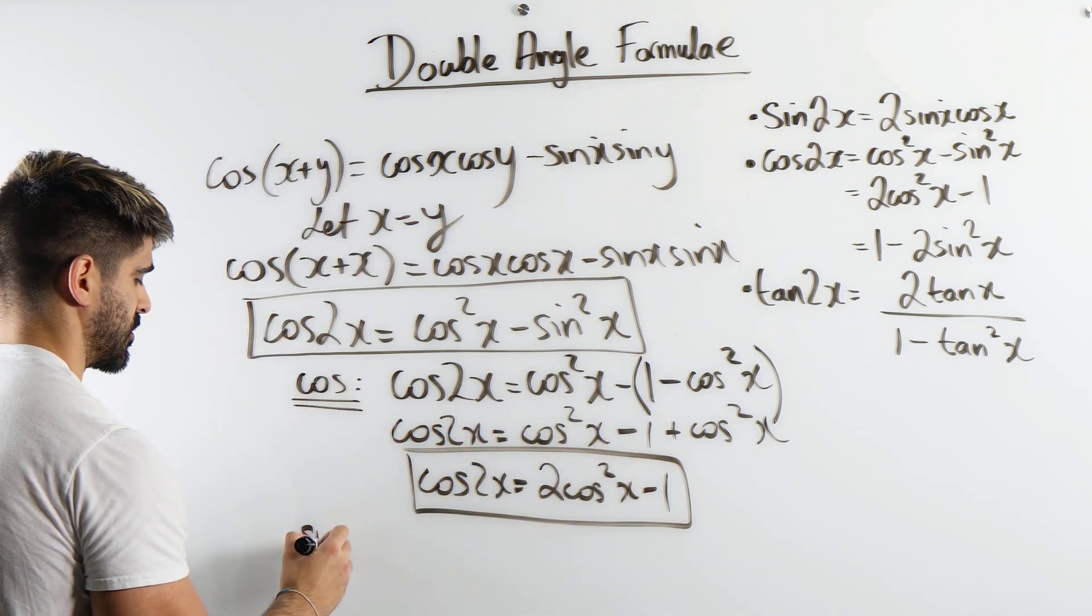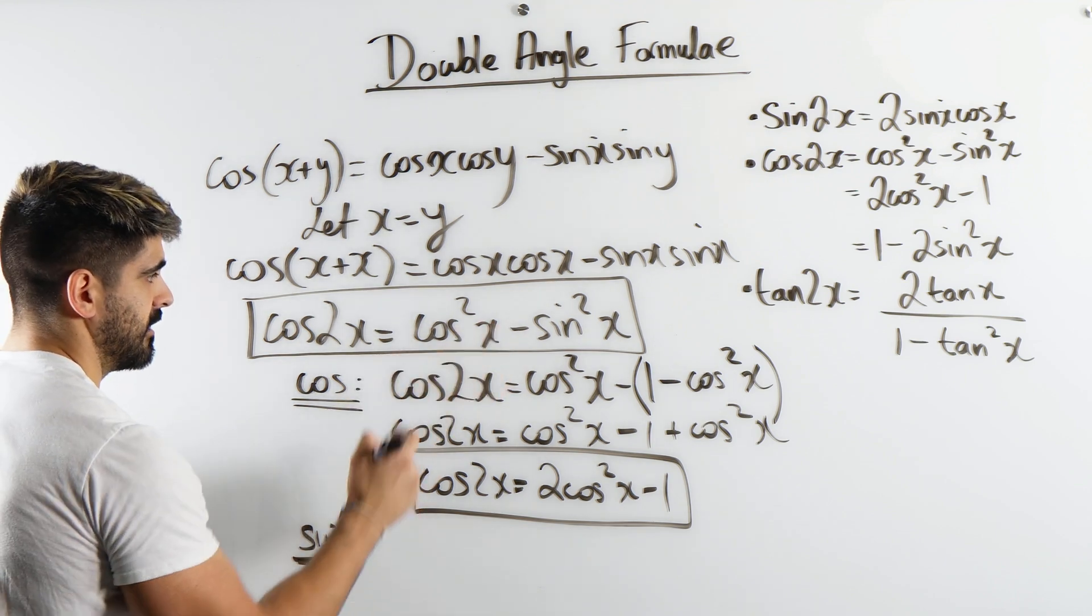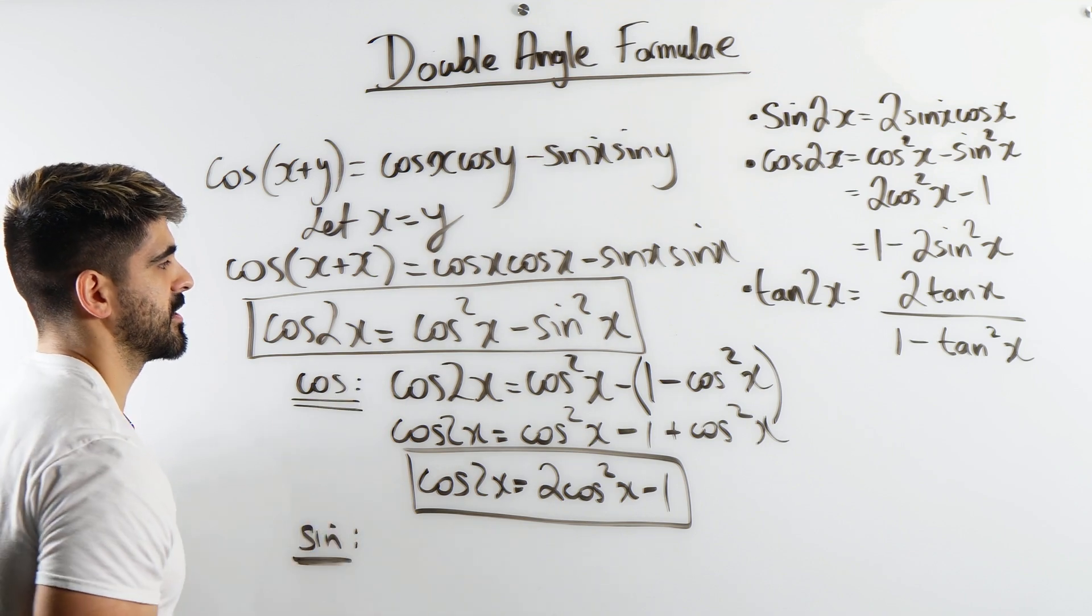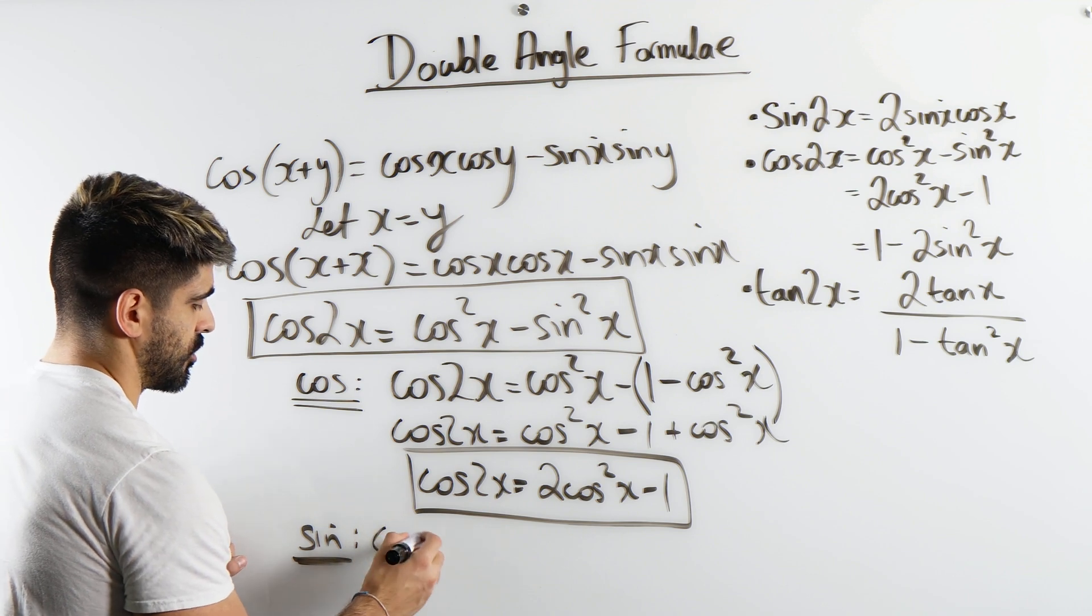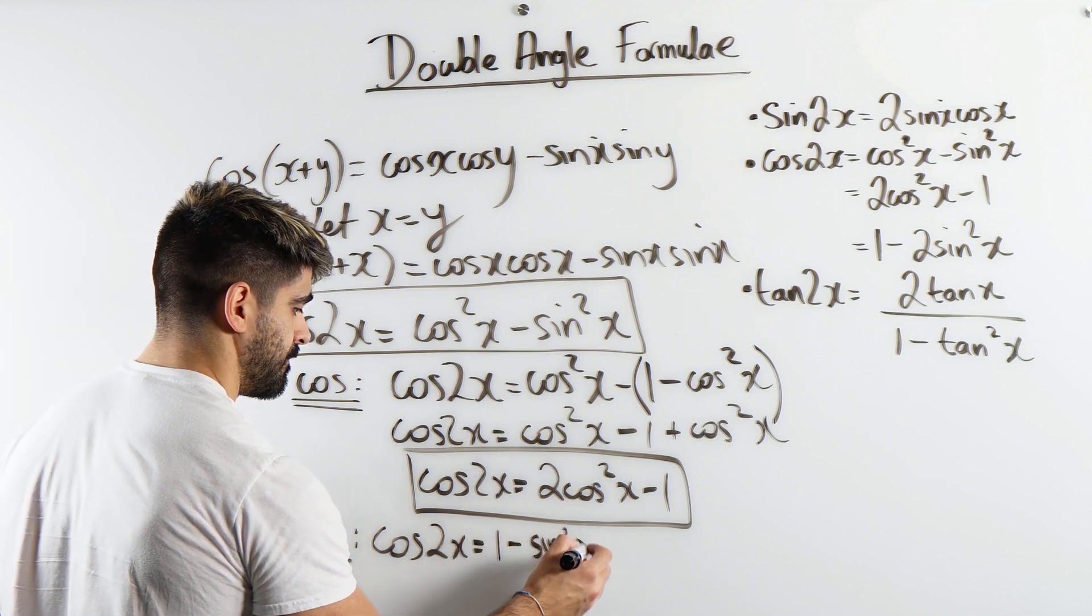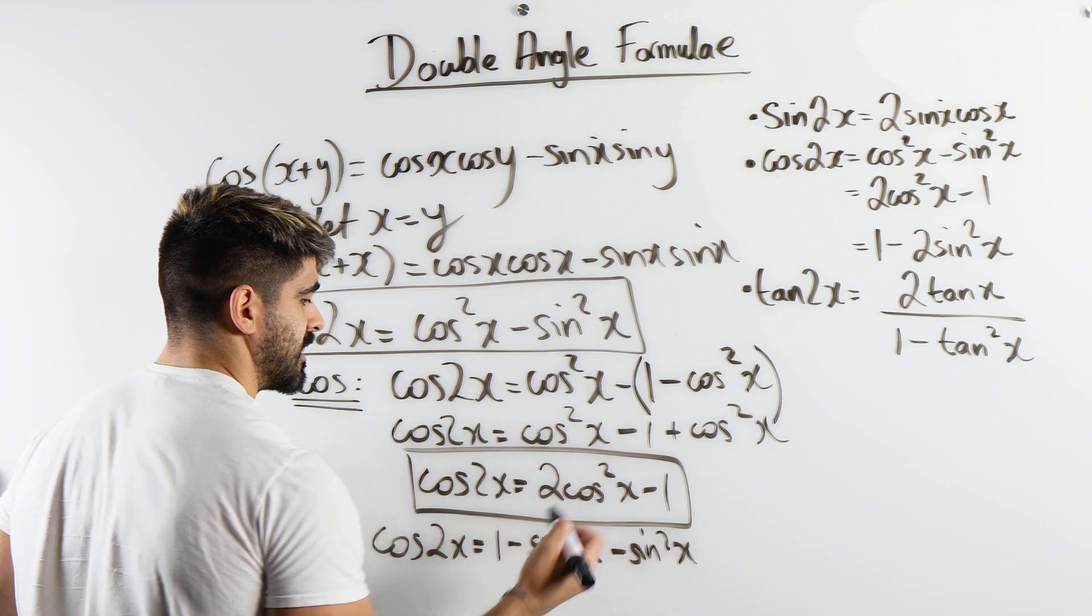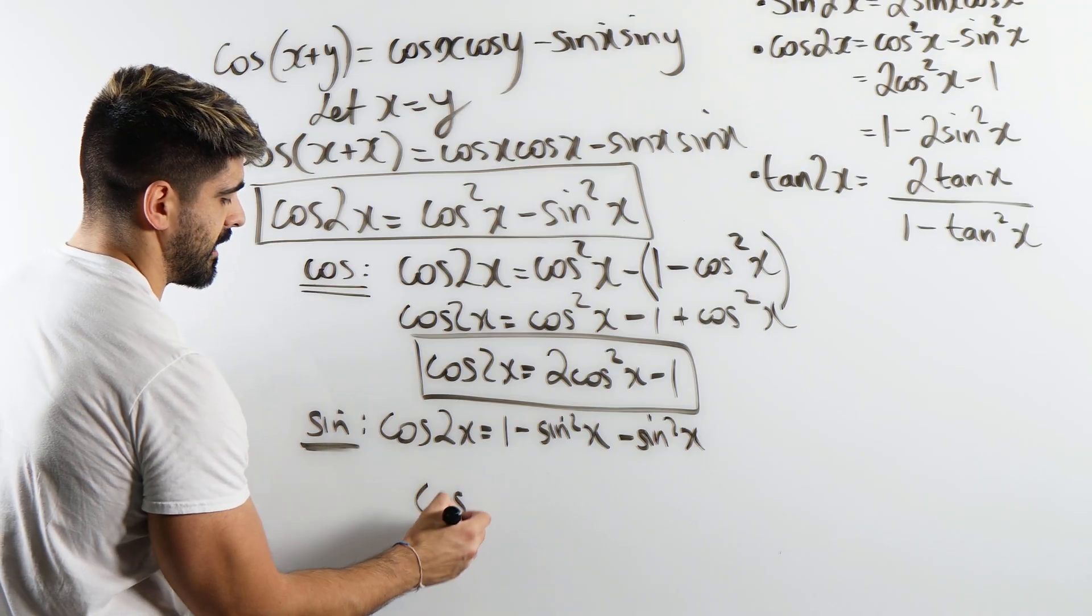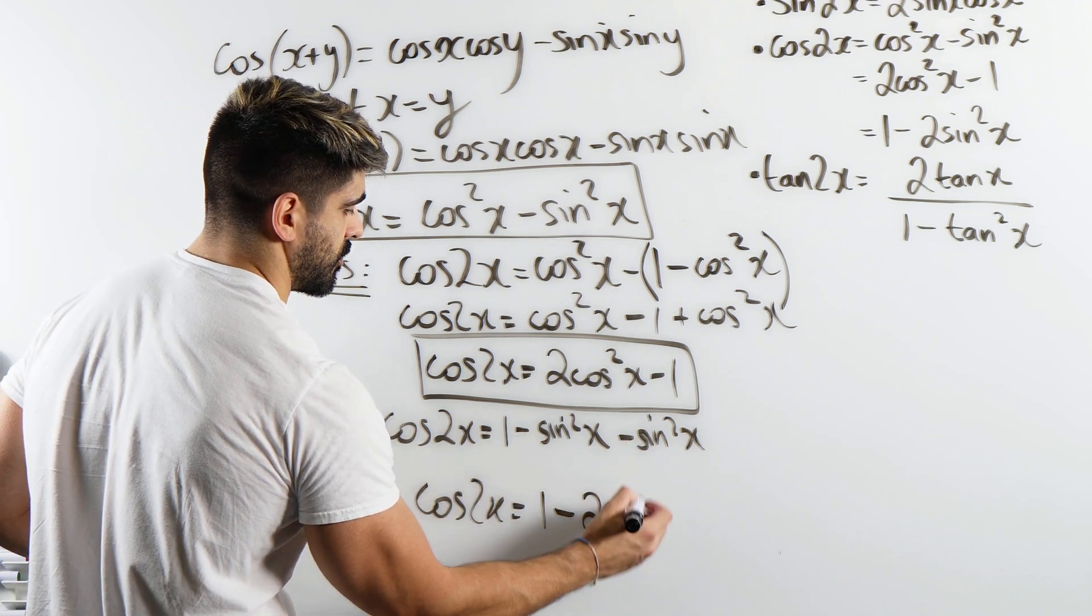And the last one, exclusively in terms of sin, so we're going to have the same thing here. But I'm going to replace cos squared with 1 minus sin squared. Here you don't need the bracket because there's no coefficient here. So we're going to get cos 2x is 1 minus sin squared minus sin squared. We can simplify that to give you 1 minus 2 sin squared x.